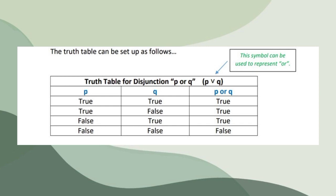So this is the truth table for disjunction P or Q. For P, we have true, true, false, false. For Q, we have true, false, true, false. For P or Q, we have true, true, true, false. So the symbol you see over there is used to represent OR.